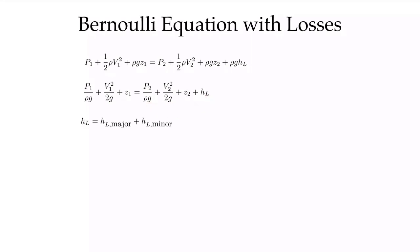h_l is composed of two components: major losses and minor losses. The major losses are due to the friction in the pipe, and that's the focus of this video. In subsequent videos, we'll discuss the minor losses and how to calculate them. For now, we'll be just looking at the major losses.